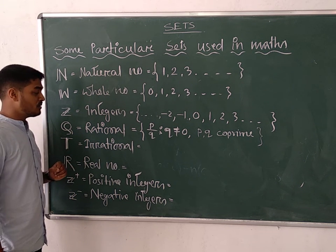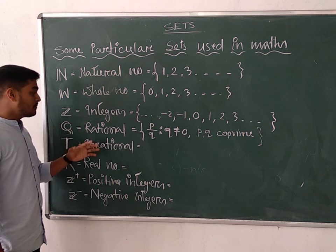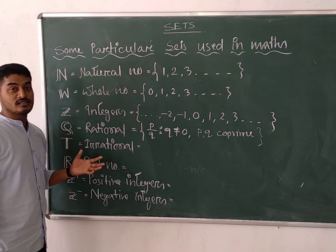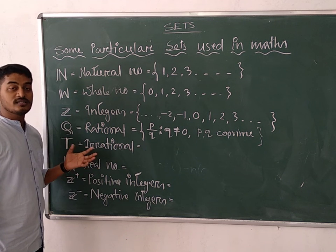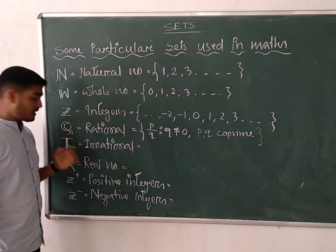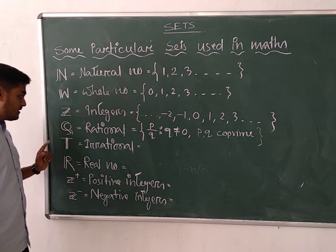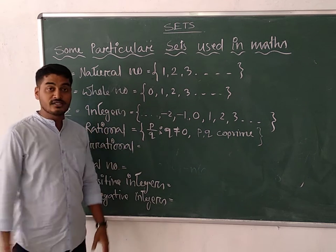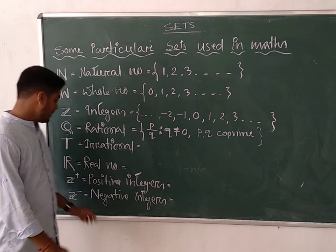Irrational numbers: the numbers which are not rational are known as irrational numbers. We cannot write irrational numbers in the form of p/q.